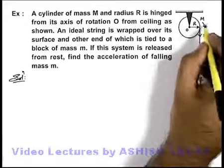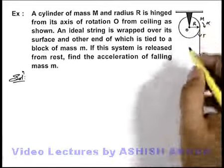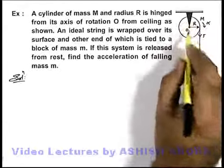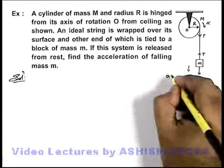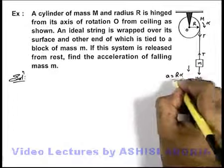If the cylinder rotates at an angular acceleration α, and the string is not slipping, we can say that the acceleration with which the mass will fall down will be Rα.